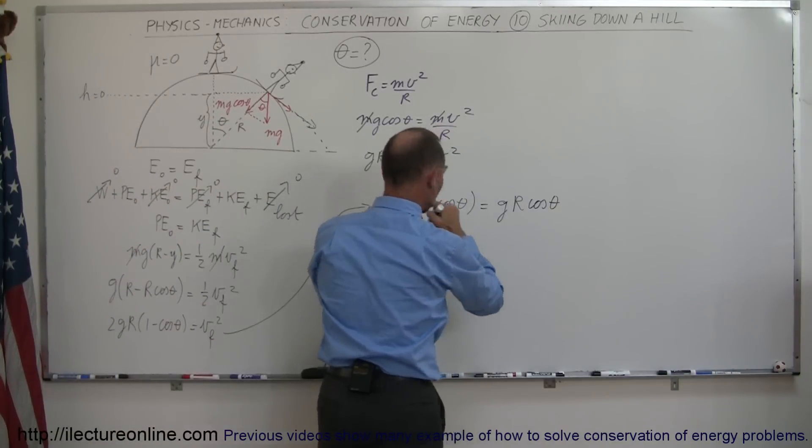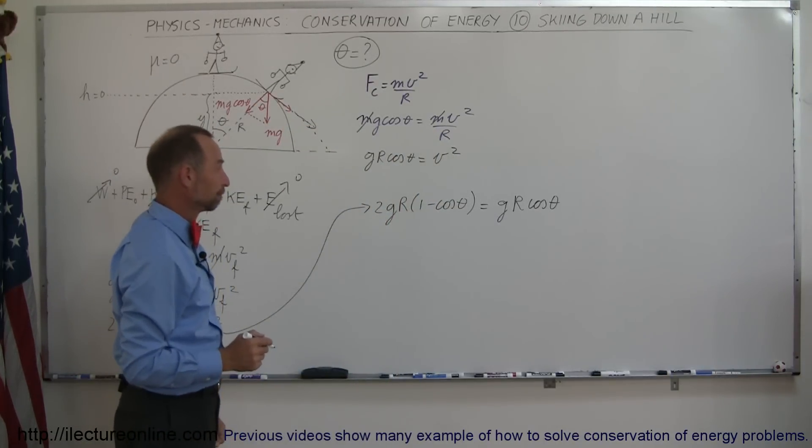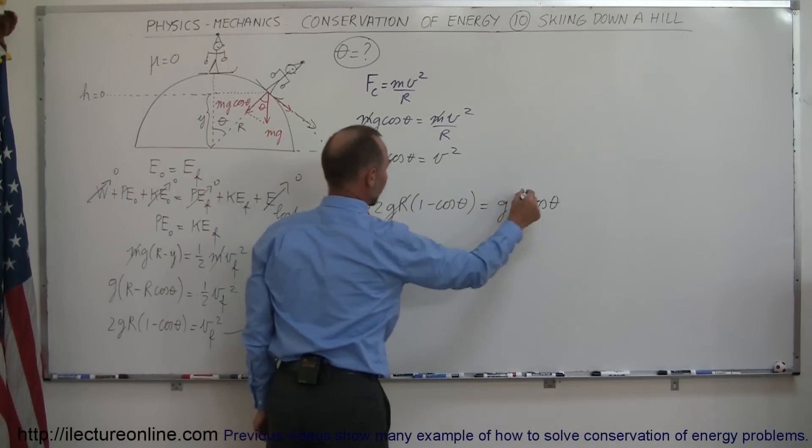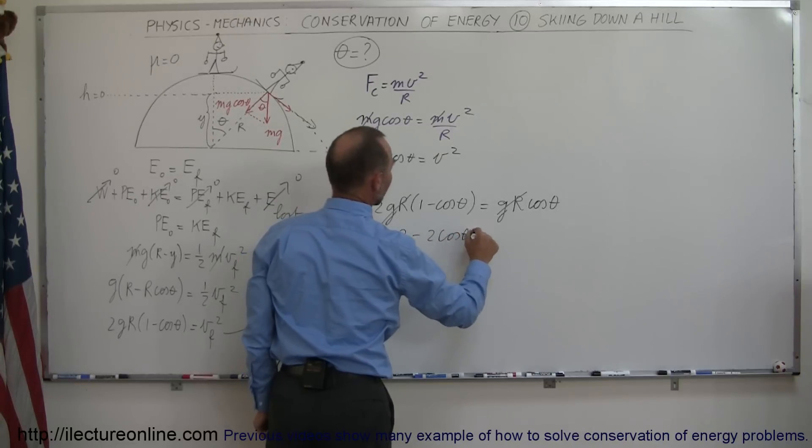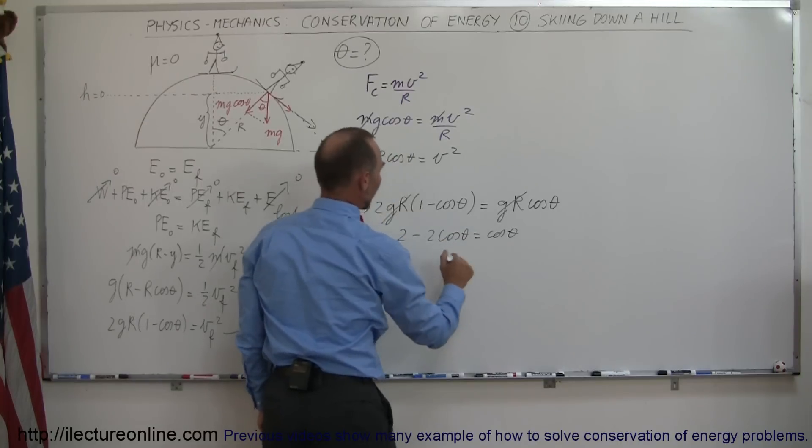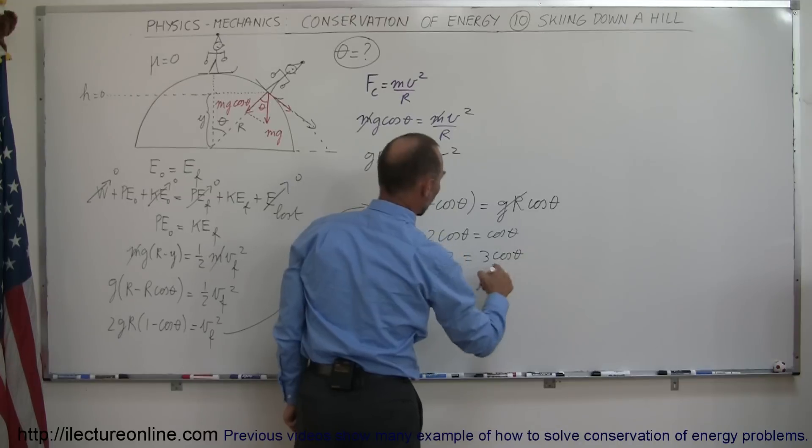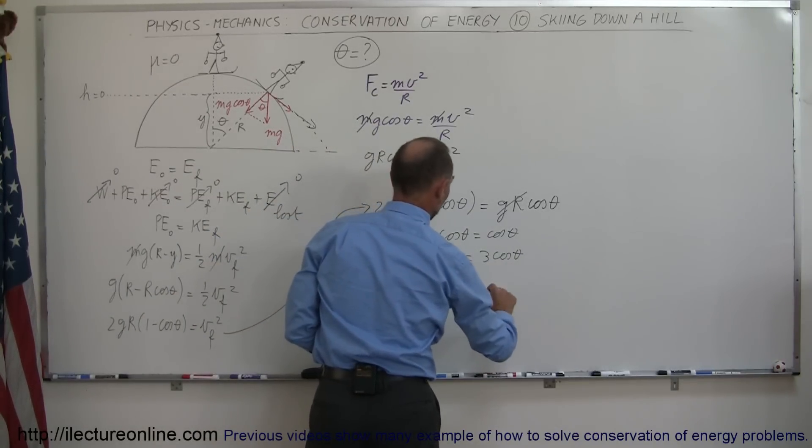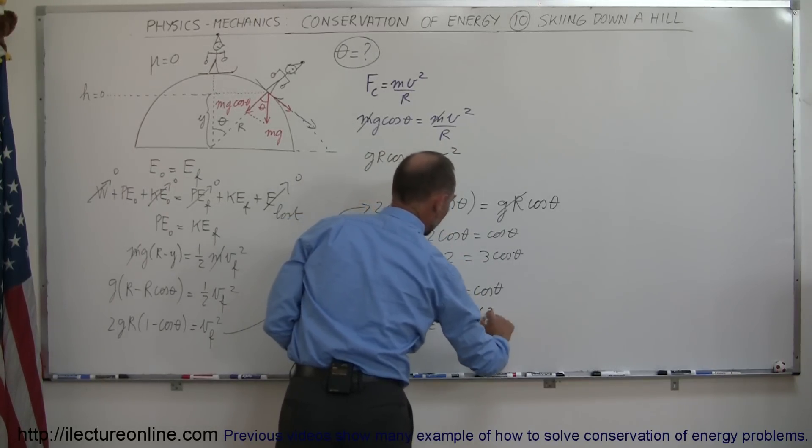And now we're going to solve this equation for theta, and that will give us the answer at what angle would the skier leave the hill. So, all right, I mean right away we can see on both sides we have a g and an r, so those cancel out. Multiplying this times this, I get 2 minus 2 times the cosine of theta equals the cosine of theta. Bringing this to the other side, I have 2 is equal to 3 times the cosine of theta, or if I divide both sides by 3 now, I get 2 thirds equals the cosine of theta, which means that theta is equal to the arcosine of 2 thirds.